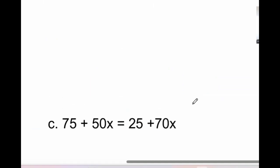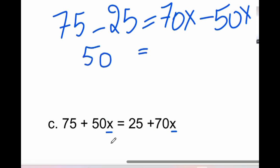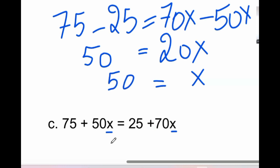This one is for you: 75 + 50x = 25 + 70x. We switch 25 to the left side and 50x to the right side, changing signs. So 75 − 25 = 70x − 50x, giving 50 = 20x. The coefficient next to x should be divided, so x = 50 ÷ 20 = 2.5.